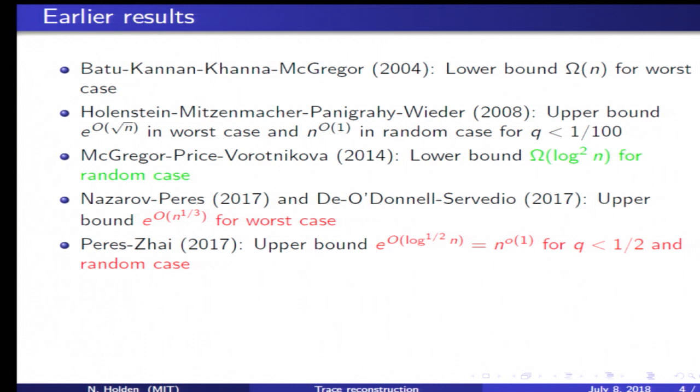Before our work, for deletion probability q bigger than a half, the number of traces for the random problem—the upper bound was the same as for worst case strings. The best known lower bound before our work is shown in green, and that was log n squared.